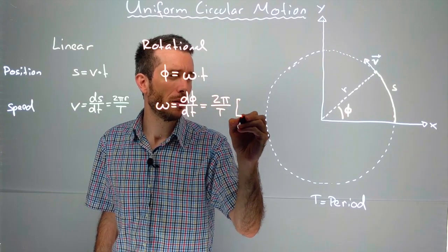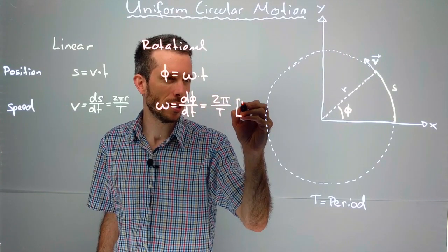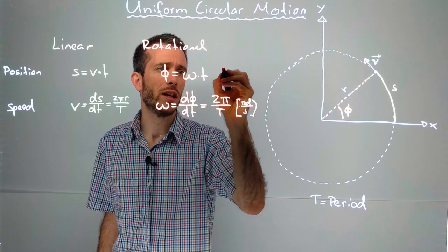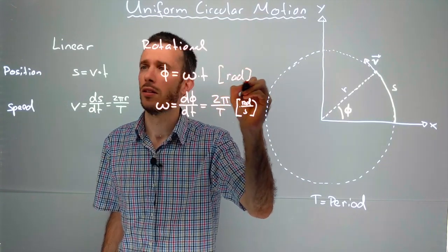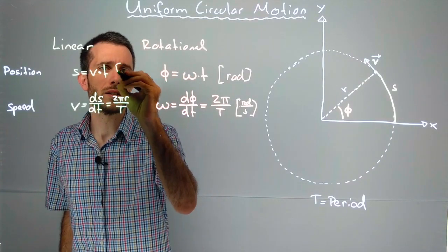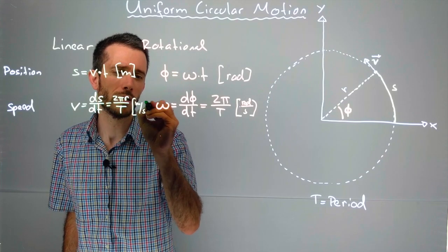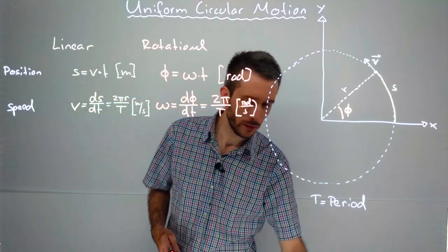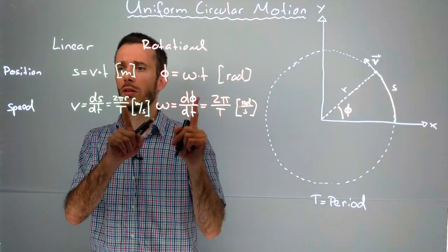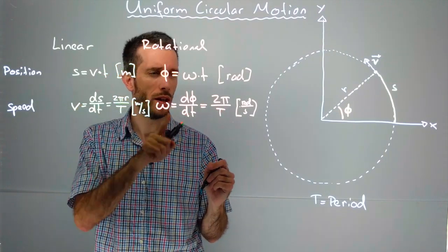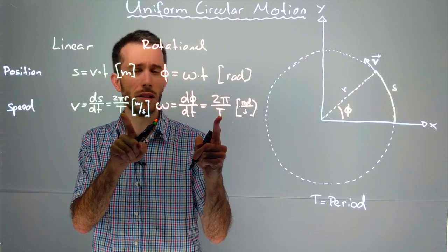As you can guess, we're going to measure the angular speed in radians per second, the angle in radians. Now, if you compare those two terms, is there a direct connection between linear speed and angular speed? If you just look at these here.